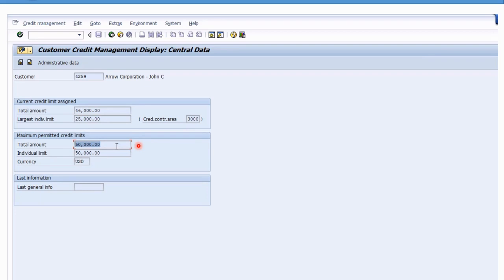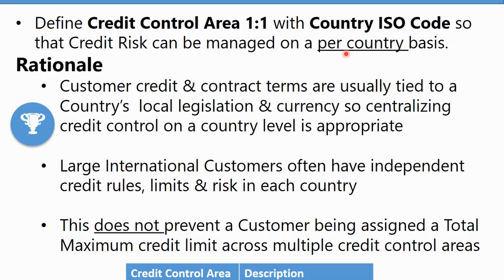Now that you understand what a credit control area looks like and how you apply credit limits to it, let's look at some recommendation options. One option I find works well is defining credit control area one-to-one with a country ISO code, so you can manage credit risk on a per-country basis. The rationale is that customer credit and contract terms are usually tied to a country's local legislation and currency, so centralizing credit control at the country level is appropriate. Even if you have multiple legal entities or company codes sharing the same customer, the credit terms applied in a given country are normally universal across contracts.